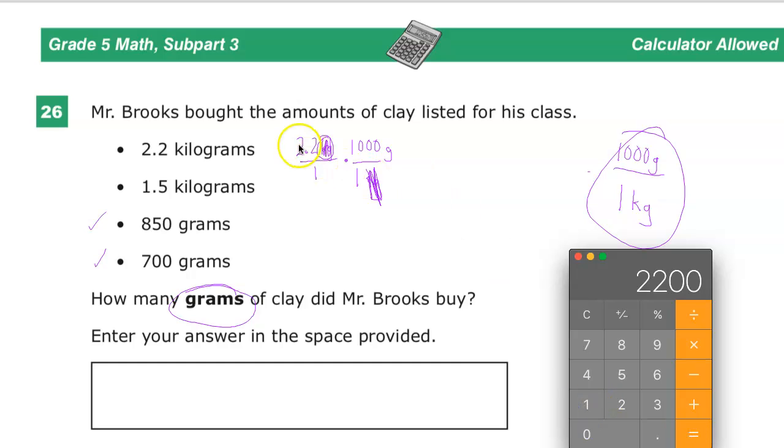So if I do the numerators it would be 2.2 times thousand. I mean really, it's three zeros right? So that's the nice thing about the metric system. One, two, three and then just fill in the blanks. So you end up with 2,200. That's 2,200 grams.